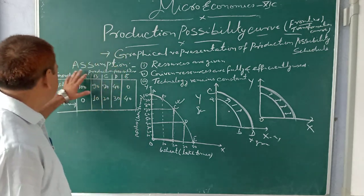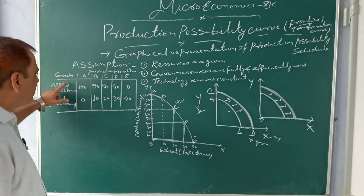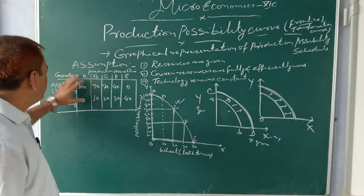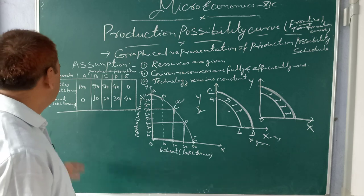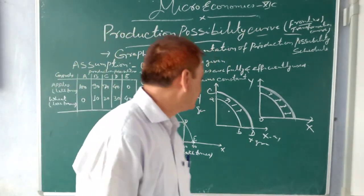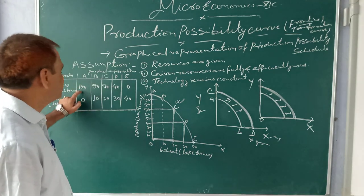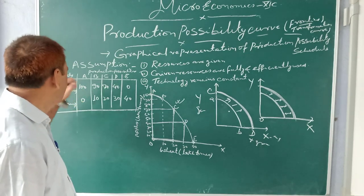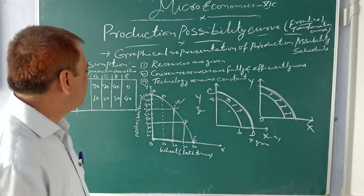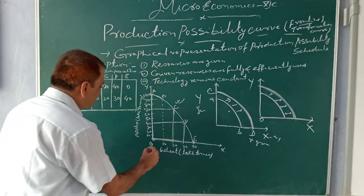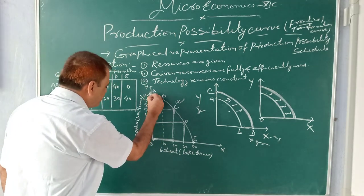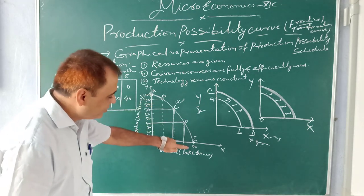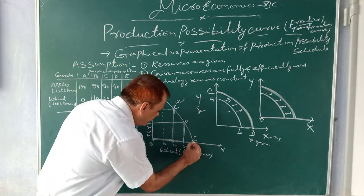So here we see there is one table. Here we have the resources - one acre land we have. We want to produce in one acre apples and wheat. If all the resources we use, hundred units we can produce of apples only. Maximum production can happen for apples. If we use total resources only for the production of wheat, then maximum we can produce eight units.